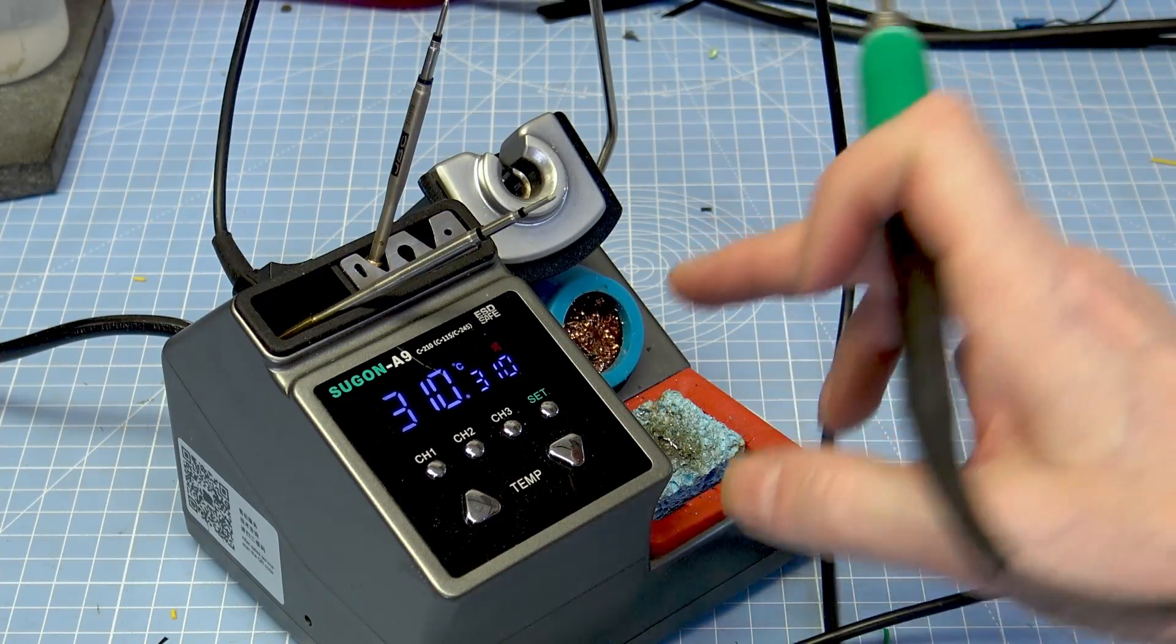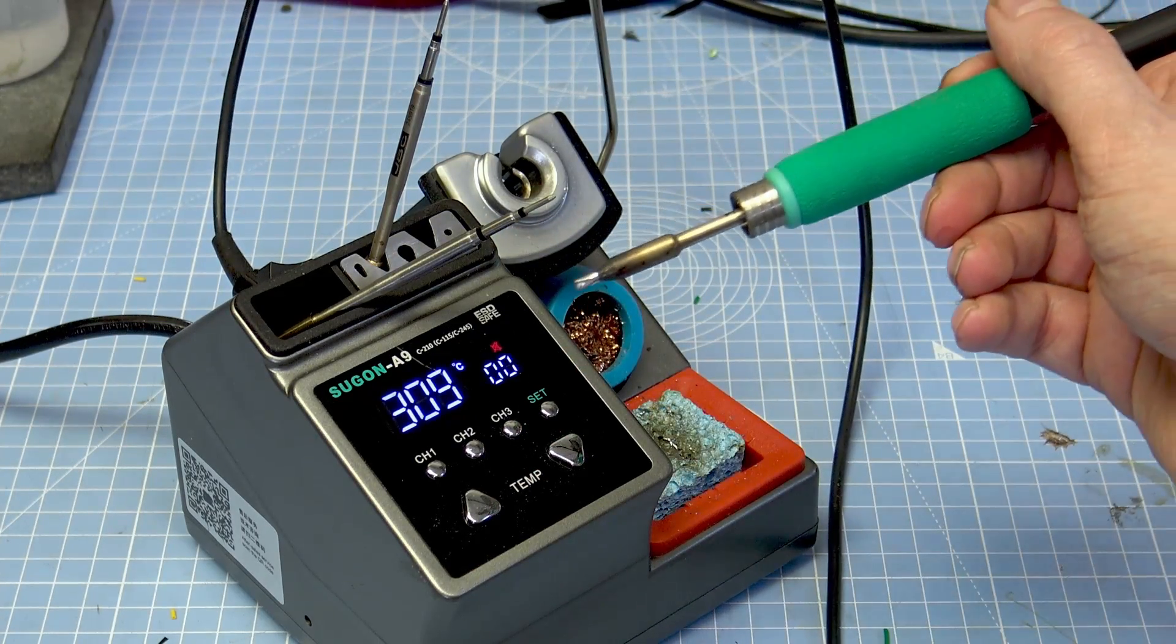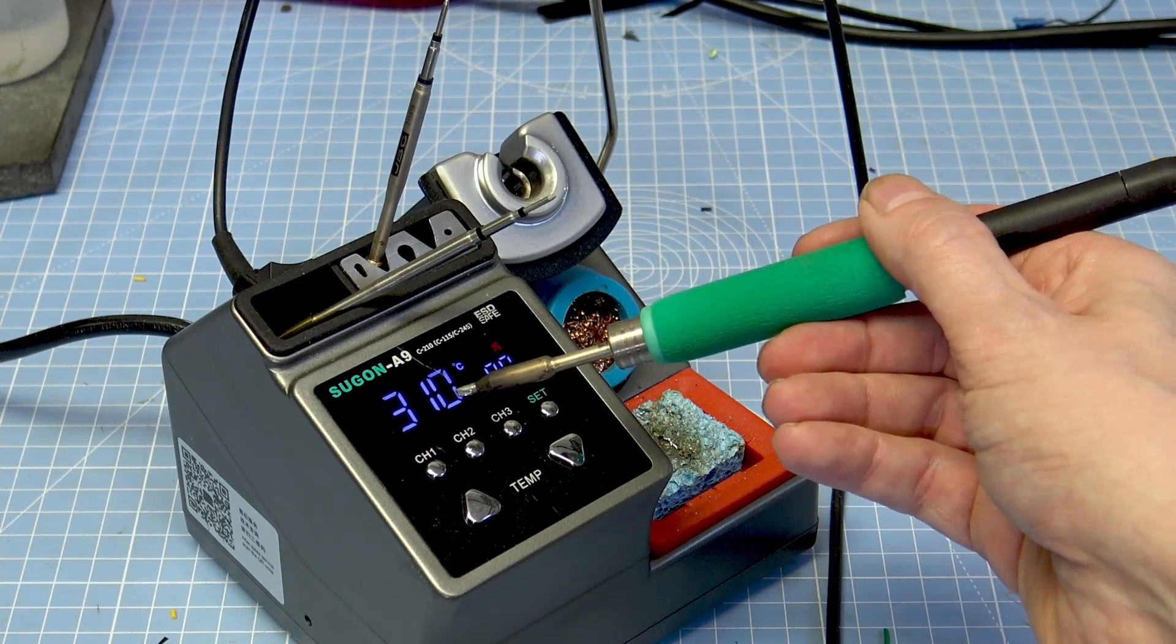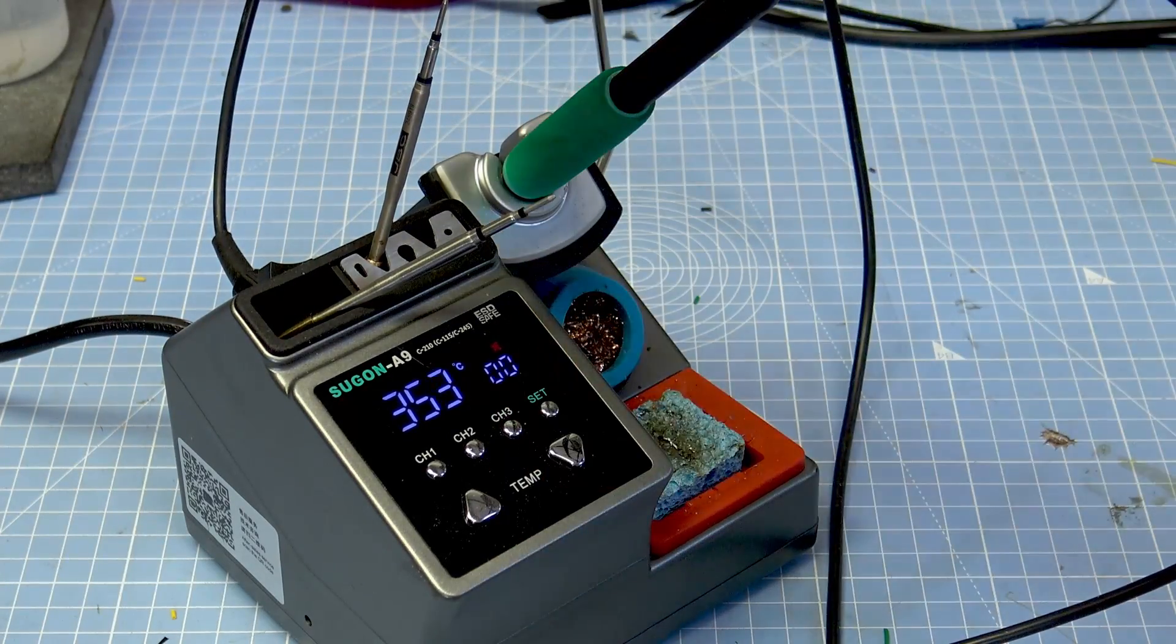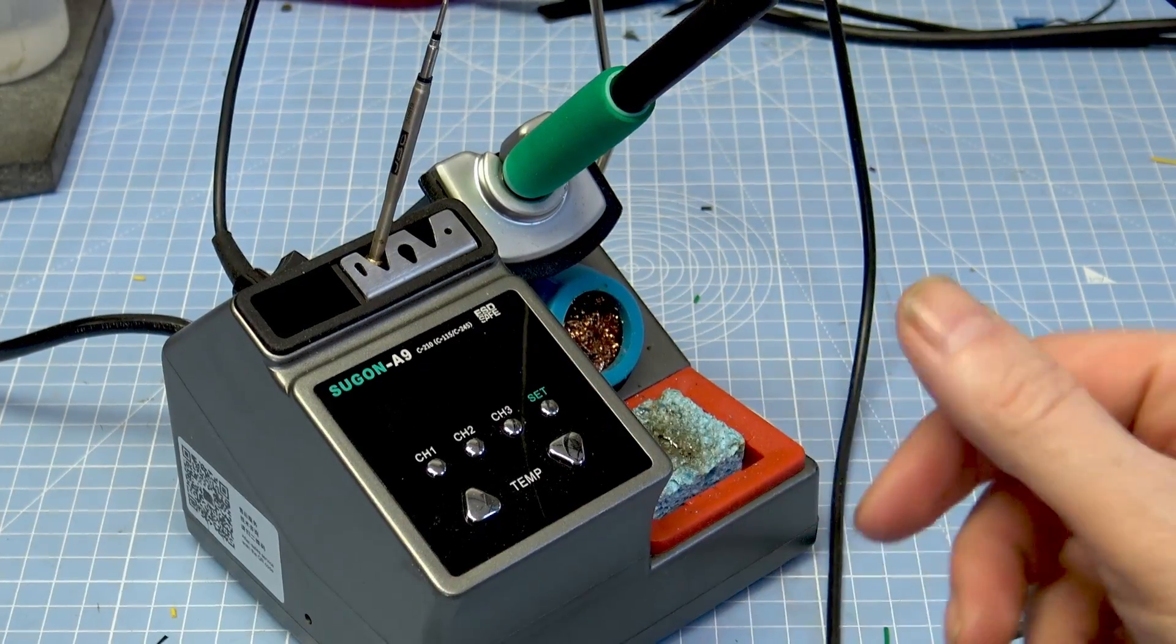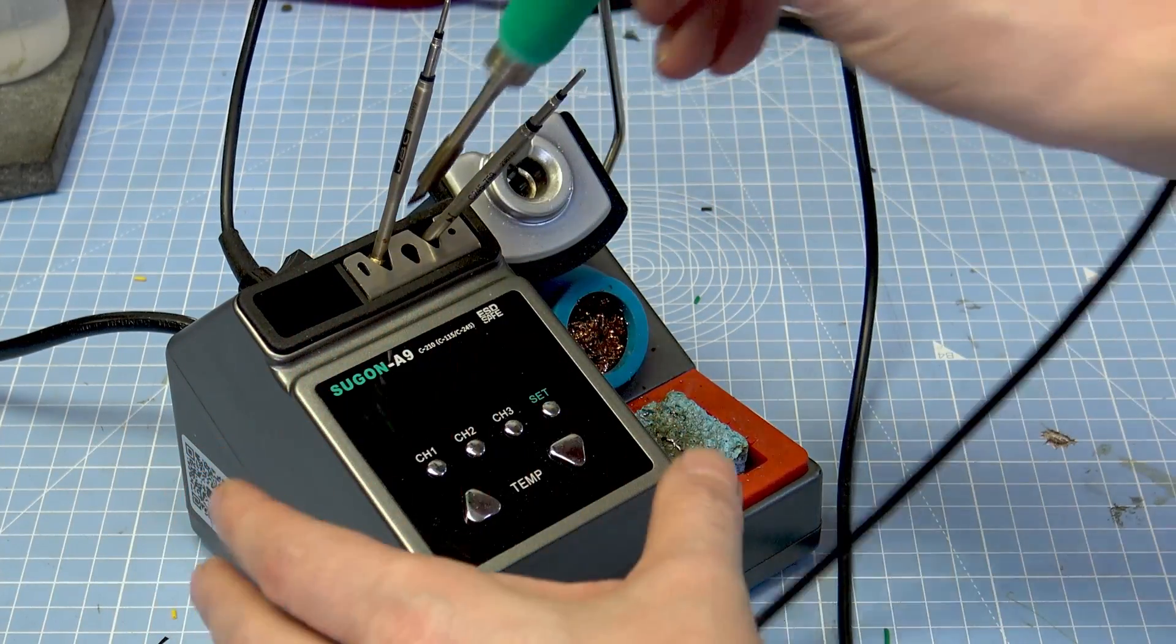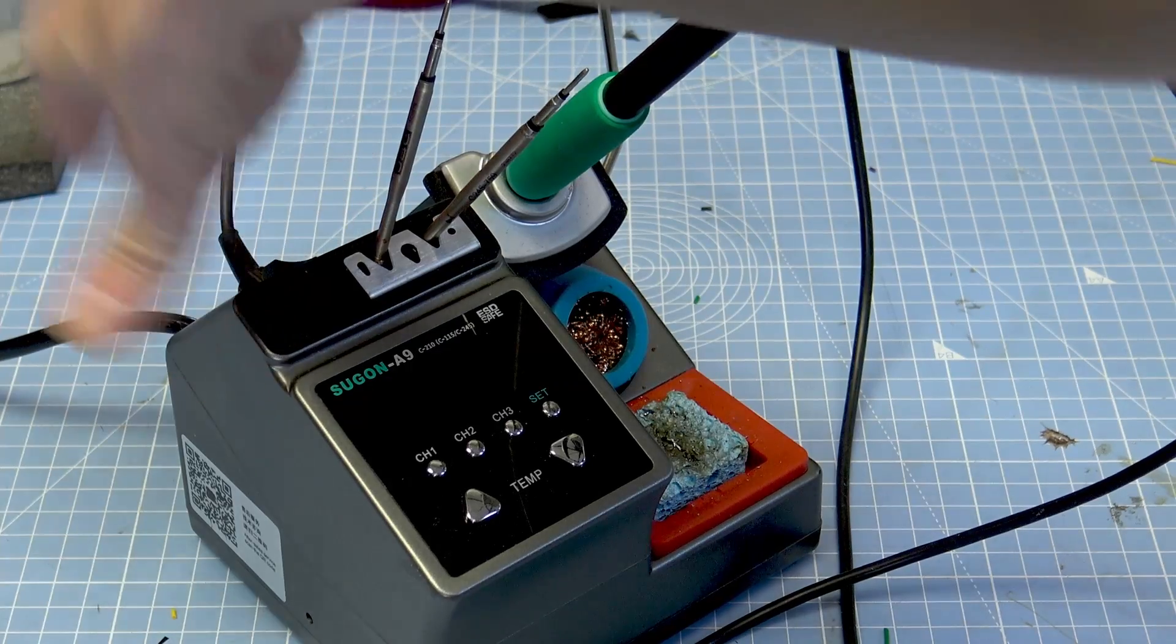I don't have the calibrator, but if we hold set down, it's now allowing us to set the offset. You can see that it's fluctuating plus or minus one degree. So that is pretty good. I don't know how to get out of it—I'm going to turn it off. So now let's put in the tip that came with it. This is the tip that you would buy with it. Turn it on.